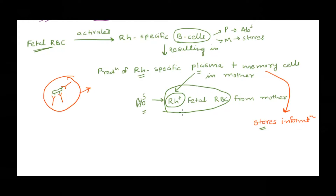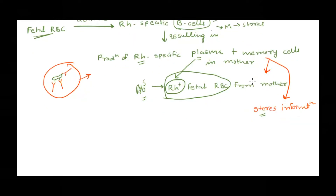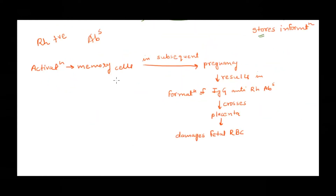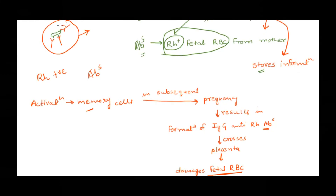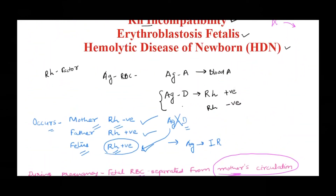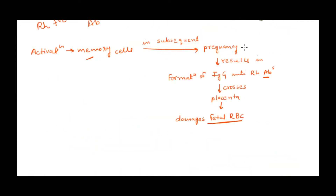The problem arises in the subsequent pregnancy, because now the mother contains memory cells against antigen D or the RH factor. In the subsequent pregnancy, these memory cells recognize the RH factor on the fetus and produce antibodies against it. These antibodies, now sensitized and specific, cross the placenta and lyse all the fetal RBCs — a very dangerous condition. That is why it is called erythroblastosis fetalis or hemolytic disease of the newborn.